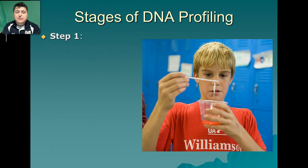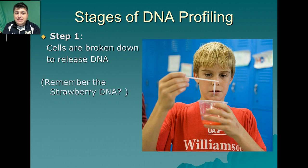The first step to producing a DNA fingerprint is we have to break down the cells so that we can get the DNA out. You might remember the activity we did in class where we took the DNA out of our strawberries. We first have to extract that DNA so that we can have access to it.